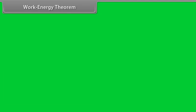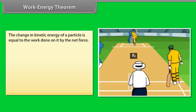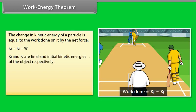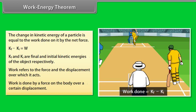Work energy theorem. The change in kinetic energy of a particle is equal to the work done on it by the net force. Kf minus Ki equals W. Here Kf and Ki are final and initial kinetic energies of the object respectively. Work refers to the force and the displacement over which it acts. Work is done by a force on the body over a certain displacement.